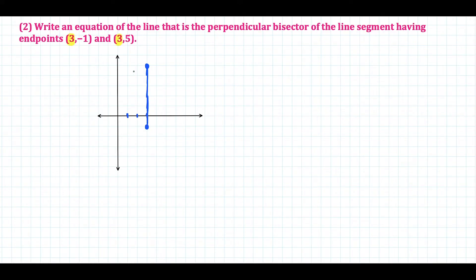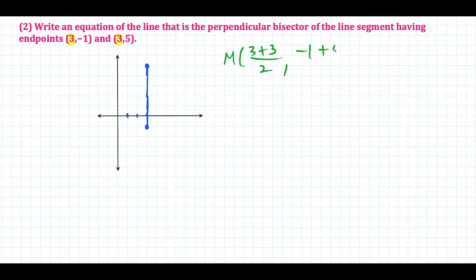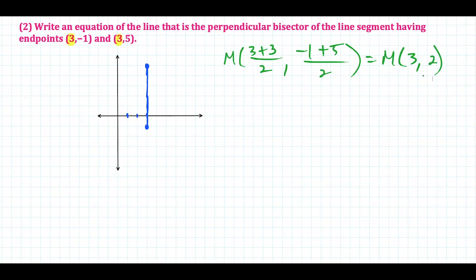We can still find the midpoint using the formula: (3+3)/2 , (-1+5)/2 = (6/2, 4/2) = (3, 2). The midpoint is at (3, 2), which is visually obvious from the graph.